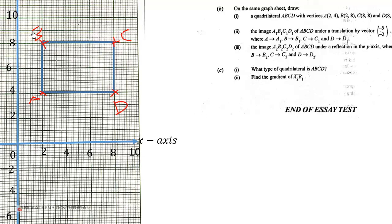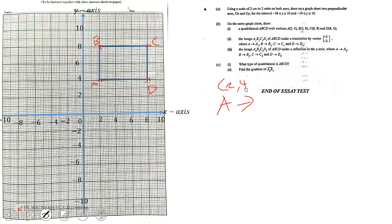Now they want us to draw the image A1B1C1D1 under a translation by vector (-5,-2). So A maps onto A1. A is having coordinate (2,4). If you apply the translation, A1 will have 2 plus negative 5, then 4 plus negative 2, so A1 will have coordinate (-3,2).